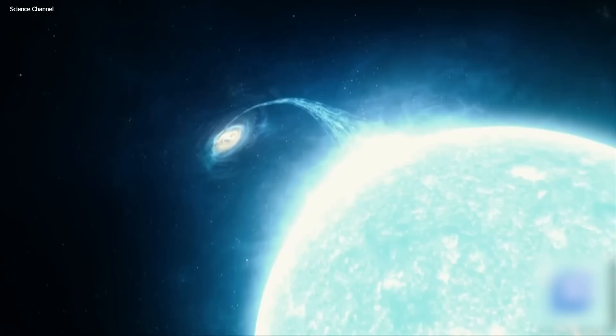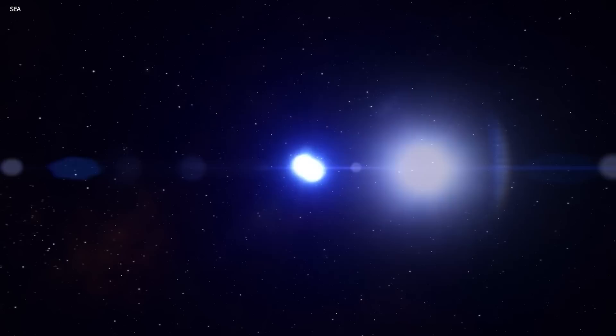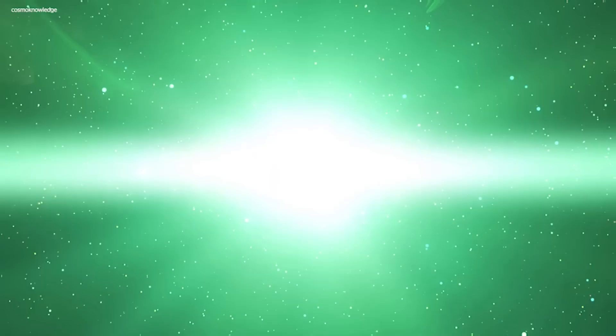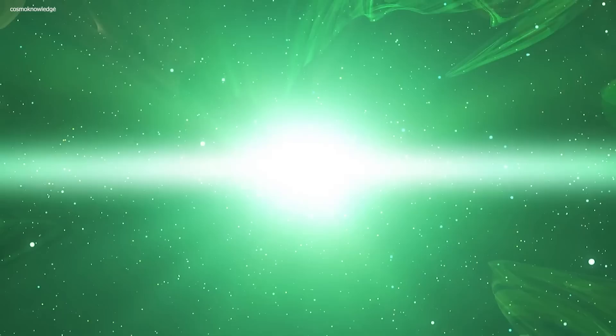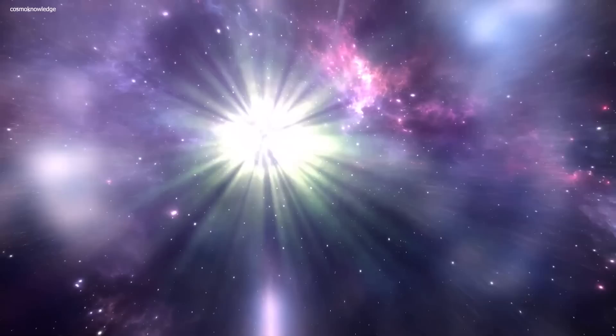Type 2 supernovas occur when a high-mass star runs out of fuel and can no longer generate the nuclear reactions that support its structure. This causes the star to collapse in on itself and then rebound in a massive explosion. When a supernova occurs, it releases an enormous amount of energy in the form of light, heat, and radiation, taking everything in its path along with it. The explosion can be so bright that it outshines the entire galaxy that the star is located in. This brightness is temporary, however, and the supernova will eventually fade away over time, usually a few weeks or, at most, a few months.